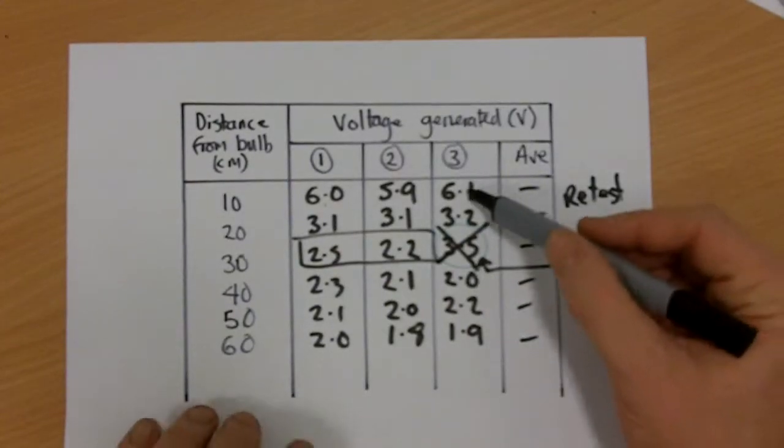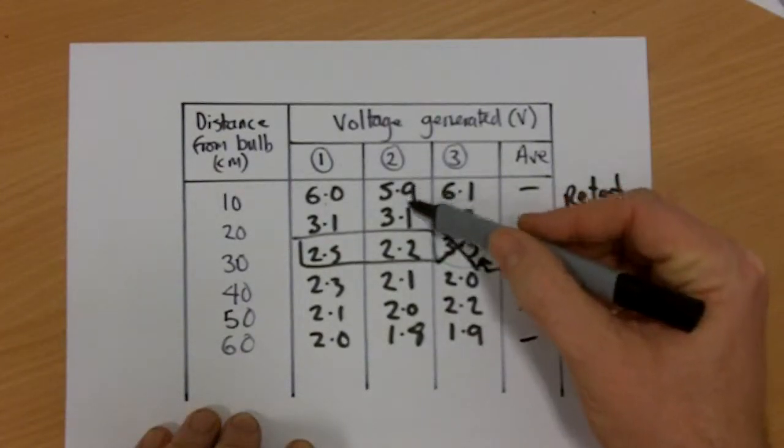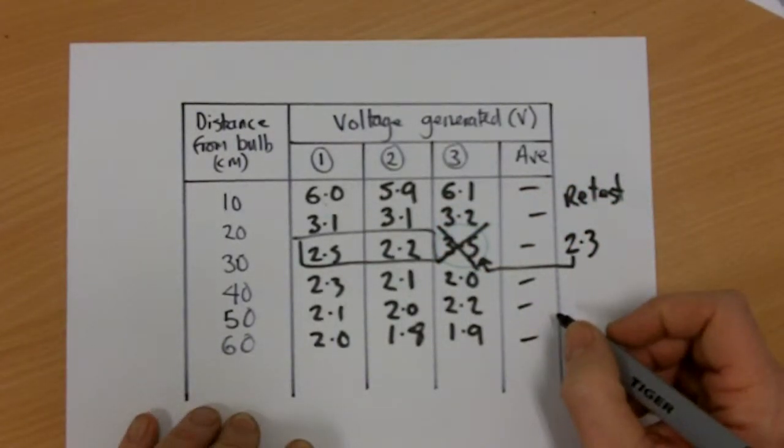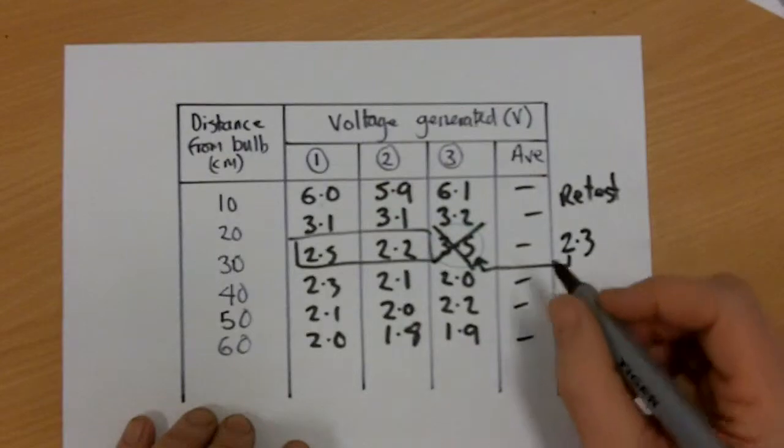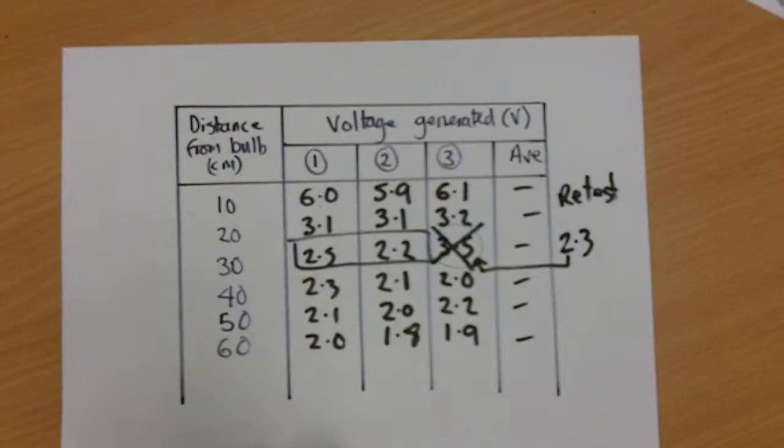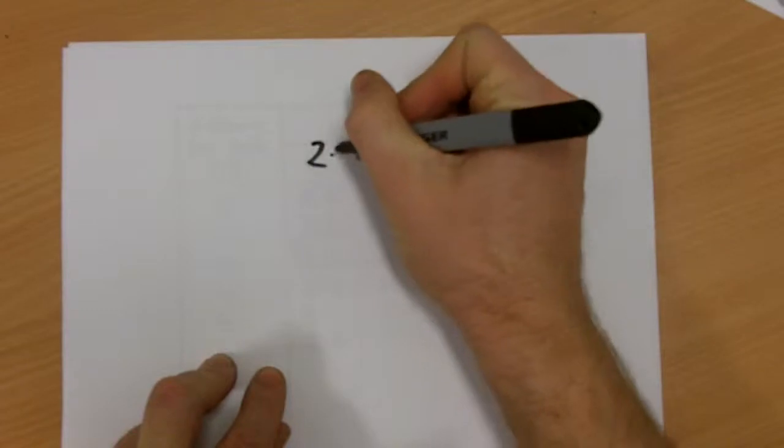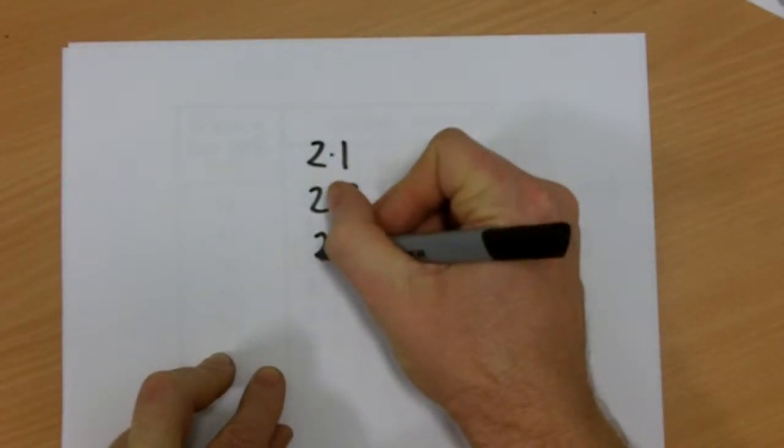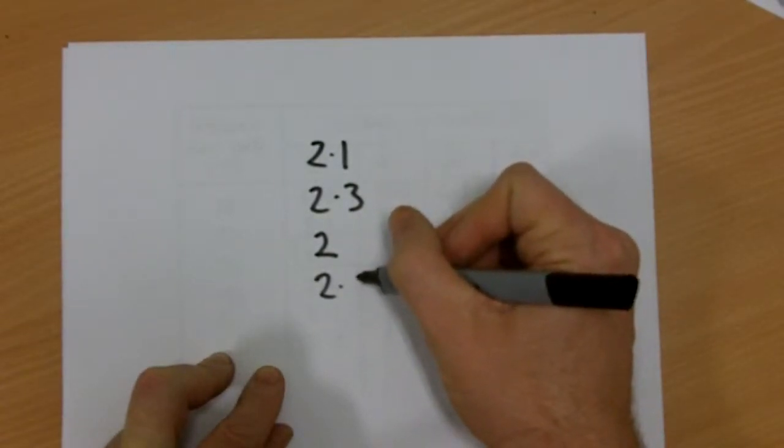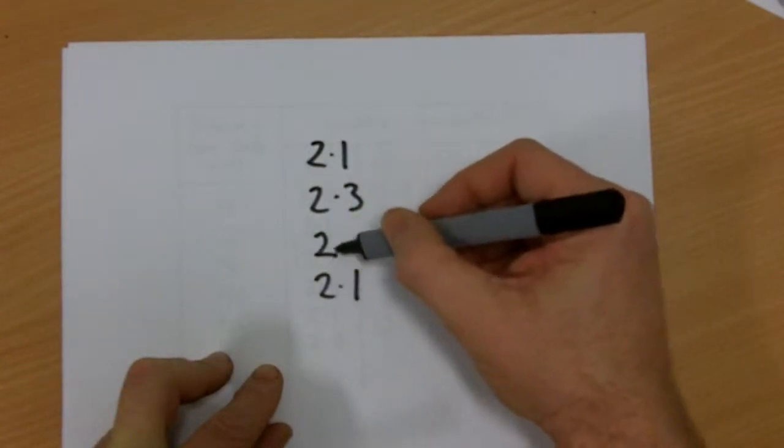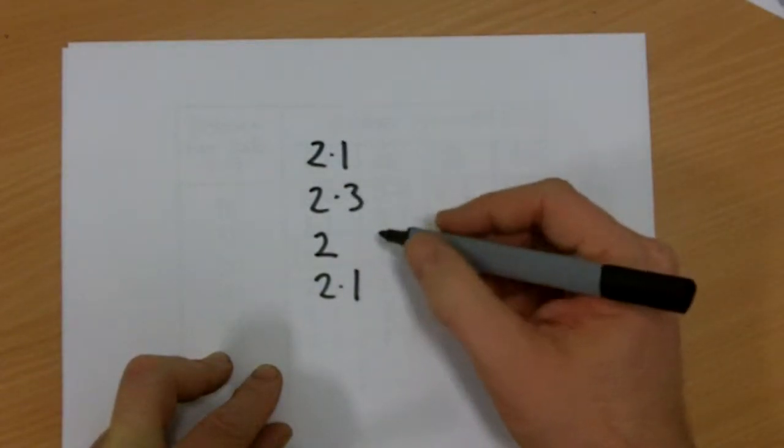Now, you will also notice that I've got the same number of decimal places in each reading, which is one decimal place. And to make sure you're using best practice, it's always good to check that you've always got the same number of decimal places. And that's really because when we're marking it, if you've got results, say, 2.1, 2.3 and 2 and 2.1 again, this result here stands out because it hasn't got the same number of decimal places.